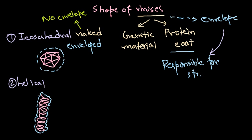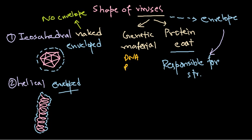So these are the different types of virus shapes. Now depending on the type of virus, it may have DNA or RNA as its genetic material. Among DNA, there are two types: double-stranded DNA and single-stranded DNA. Similarly for RNA, it can be double-stranded RNA or single-stranded RNA. Single-stranded RNA can be further divided into positive-strand and negative-strand RNA — we will discuss these in detail later.